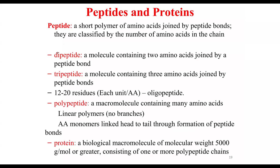A protein is a biological macromolecule with a molecular weight of around 5,000 grams per mole or greater, consisting of one or more polypeptide chains. The molecular weight of a protein is usually 5,000 grams per mole or greater than that.